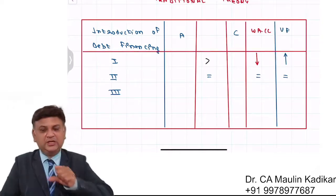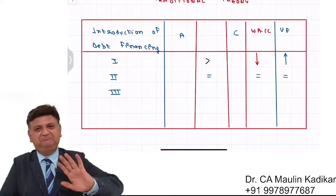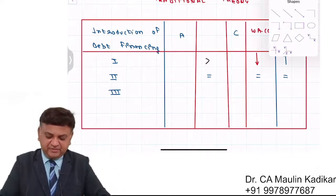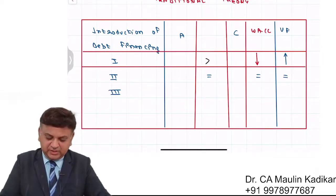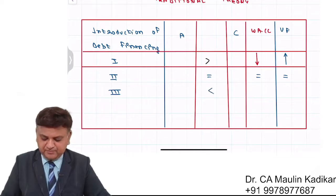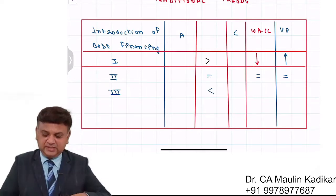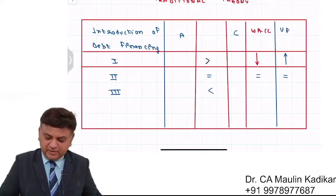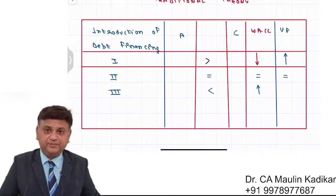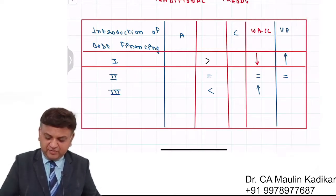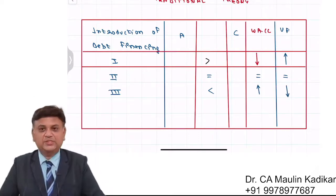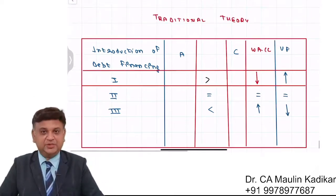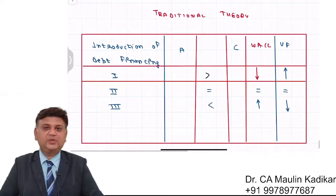If at all you continue to raise further debt financing, then it will have an adverse impact. The cost will be more than the advantage, and in that case, the weighted average cost of capital will start moving up. In that case, the value of the firm will start moving down. This is what is going to take place in the third stage — that is what the theory says.